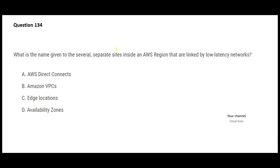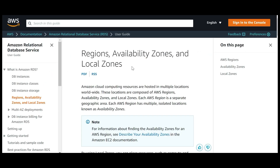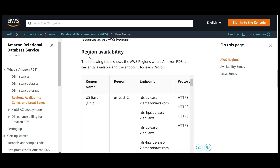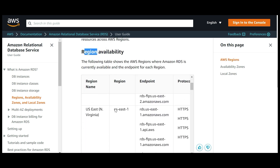Let's look at this question: what is the name given to several separate sites in an AWS region? You know that in an AWS region there are availability zones that are linked together with low-latency networks. Always remember: there are regions, inside regions there are AZs and local zones, and inside AZs there are data centers. This is a list of regions and these are the AZs that are available.